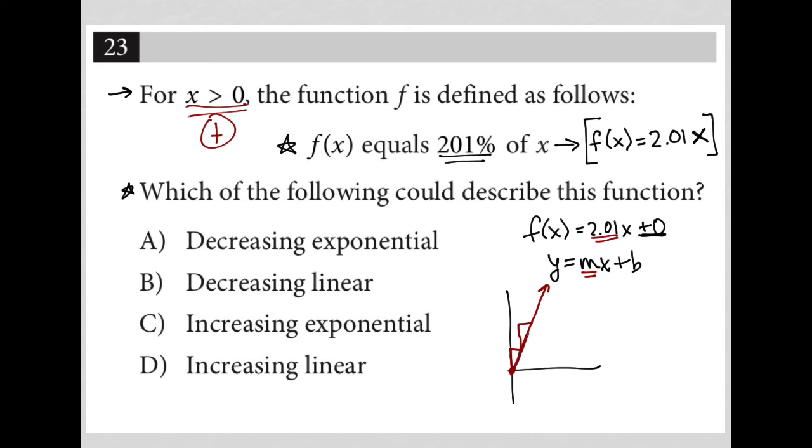Which means that choices A and B are gone because they both say decreasing. And then choice C is gone because it says we're increasing exponentially. There's no exponential growth here. This is a linear function with a slope of 2.01, so our answer is choice D.